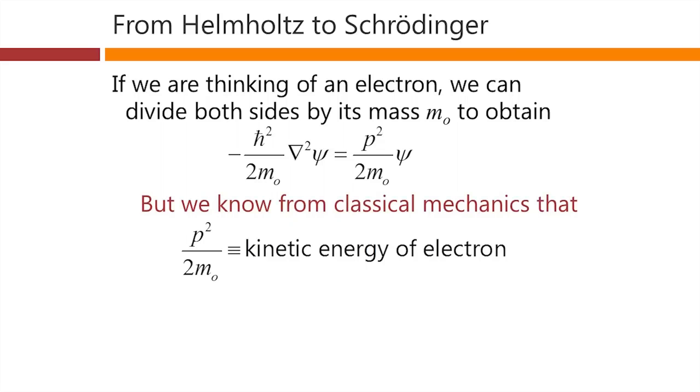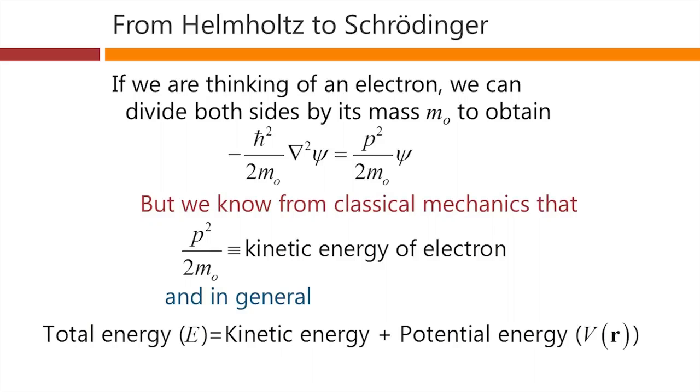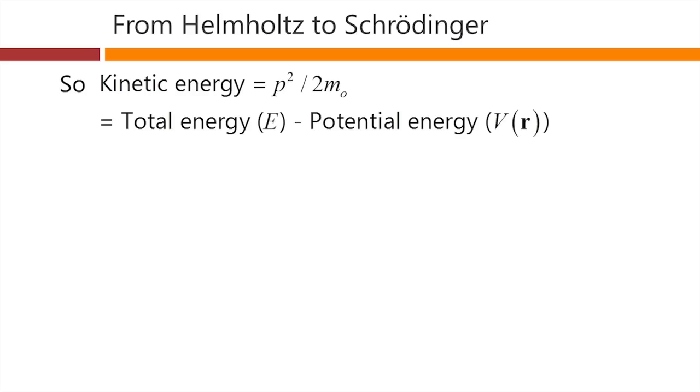Now, we know from classical mechanics that this p squared over 2 m0 is classically just a kinetic energy, in this case, of an electron, of a particle with mass m0. And in general, we know from classical mechanics, and we hope it's going to work here in quantum mechanics as well, that total energy, which we could call E, is just the kinetic energy plus the potential energy. And we'll call the potential energy v of r. So kinetic energy is total energy minus potential energy, obviously.